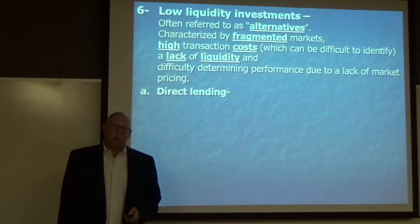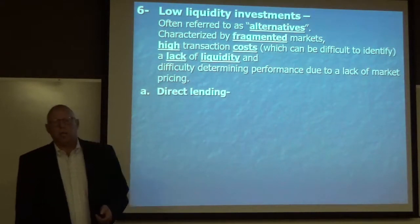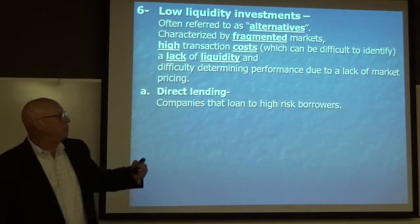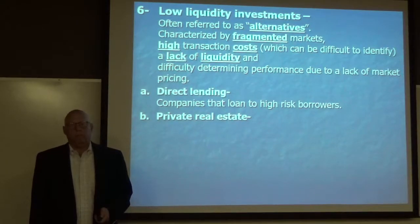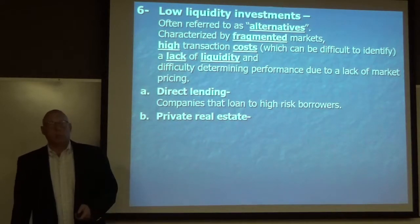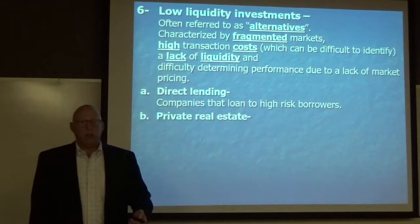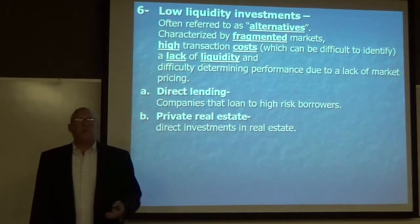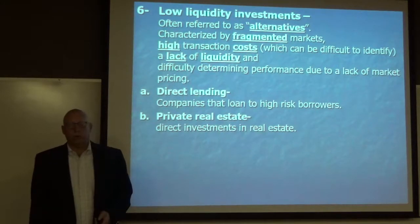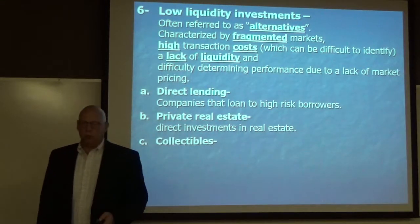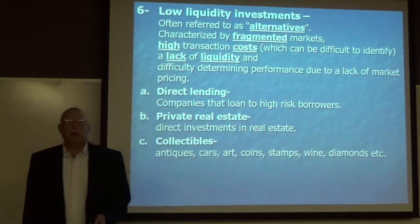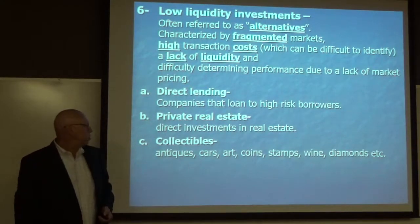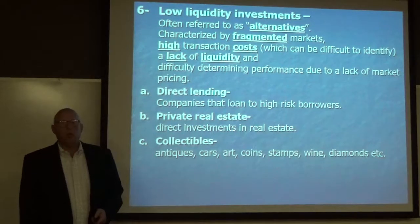Let's look at some of the classifications of low-liquid investments or alternative investing. Direct lending — investing in companies that then loan to high-risk borrowers, subprime. Private real estate — directly investing in real estate as opposed to going through a REIT. Collectibles — antiques, cars, art, coins, stamps, wine, diamonds, things like that. These are collectibles, and they are low-liquid investments.